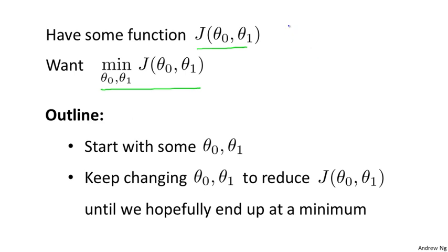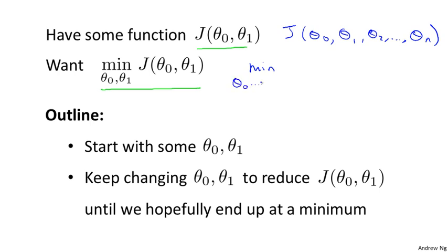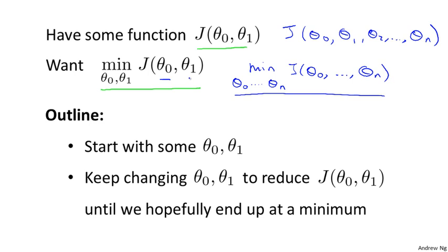It turns out that gradient descent actually applies to more general functions. So imagine if you have a function j of θ₀, θ₁, θ₂, up to some θₙ, and you want to minimize over θ₀ up to θₙ. Gradient descent is an algorithm for solving this more general problem. But for the sake of brevity and succinctness of notation, I'm just going to pretend I have only two parameters throughout the rest of this video.